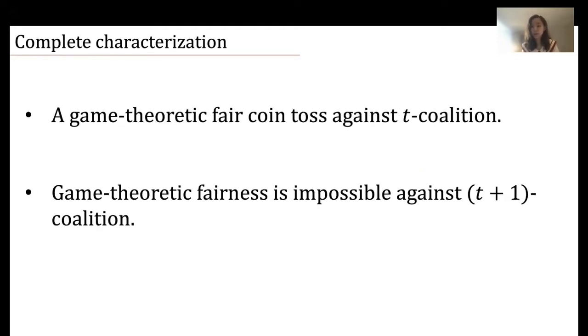This work answers that question. We explore the broad range of parameters of coalition size between half and n minus one. In this work, we give a complete characterization of game theoretic fairness. We give a construction of a game theoretically fair coin toss protocol against a T-sized coalition, and we show that game theoretic fairness is impossible against a T-plus-one-sized coalition. I'll give the expression of T later. For the rest of the talk, we will mainly focus on the construction of the protocol.